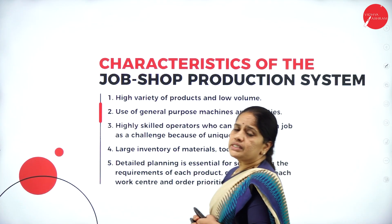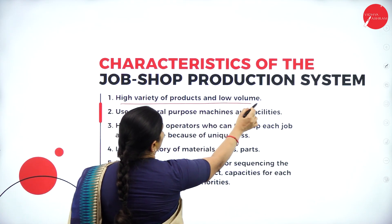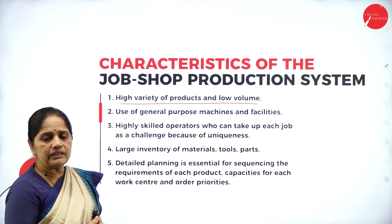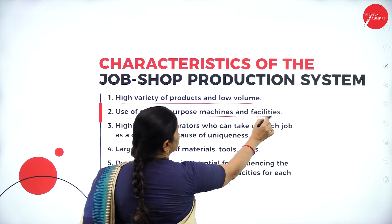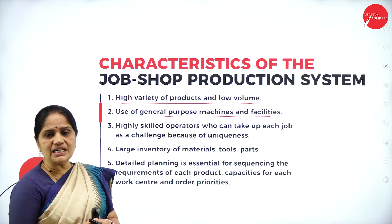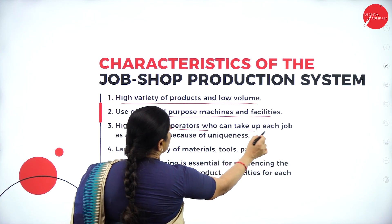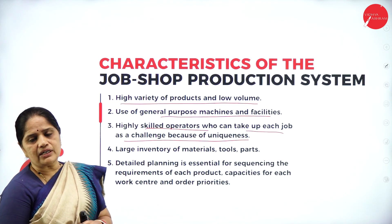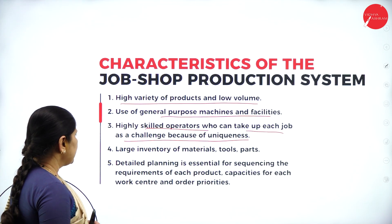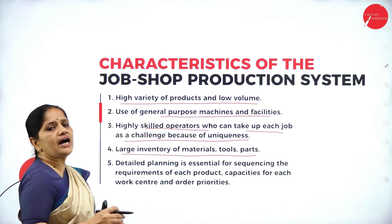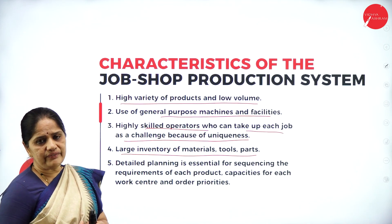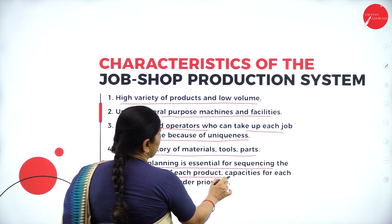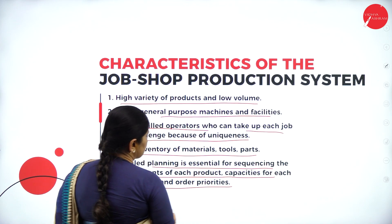Now let us understand the features of job shop production. There is a high variety of products and low volume. There will be use of general purpose machines and facilities. Highly skilled operators are needed who can take up each job as a challenge because of its uniqueness. There will also be a large inventory of materials, tools, and parts — you need to have a stock of iron, various tools, and parts in the inventory. Detailed planning is essential for sequencing the requirements of each product, capacities for each work center, and order priorities.